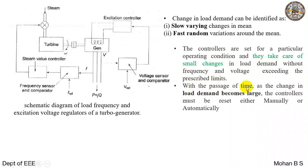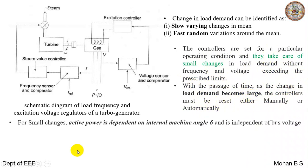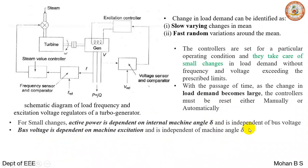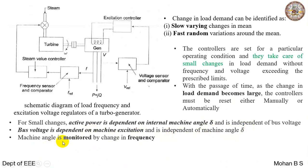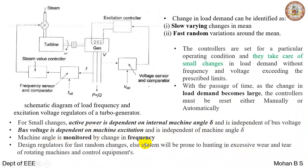With the passage of time, as the change in load demand becomes larger, the controllers must be reset either manually or automatically. For small changes, active power is dependent on internal machine angle and is independent of bus voltage. Bus voltage is dependent on machine excitation and is independent of machine angle delta. Machine angle is monitored by change in frequency. Regulators must be designed for fast random changes, else the system will be prone to hunting and excessive wear and tear of the rotor, machines, and control equipment.